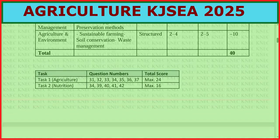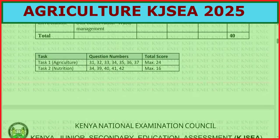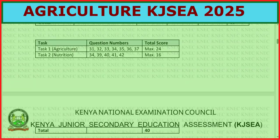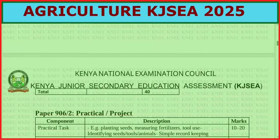Looking at the tasks: Task 1 in agriculture covers questions 31 through 37, maximum of 24 marks. Task 2 on nutrition covers questions 38, 39, 40, 41, and 42, maximum of 16 marks, giving us a total of 40 marks.